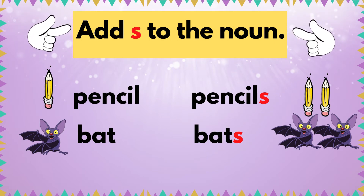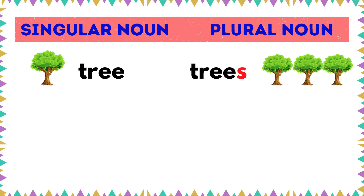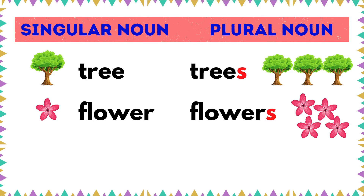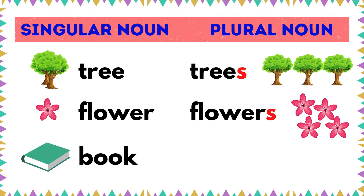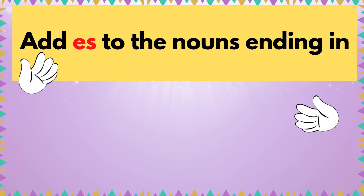Here are more examples. Tree becomes trees. Flower becomes flowers. Book becomes books.